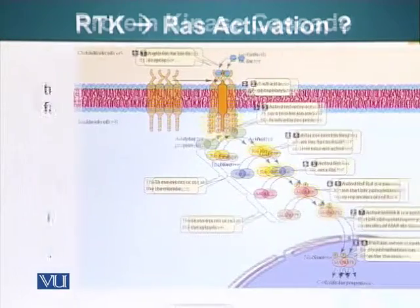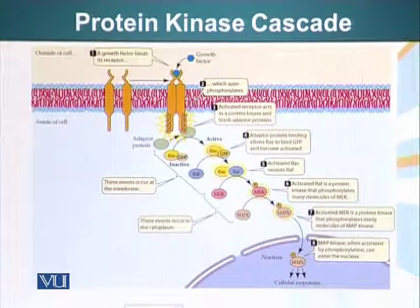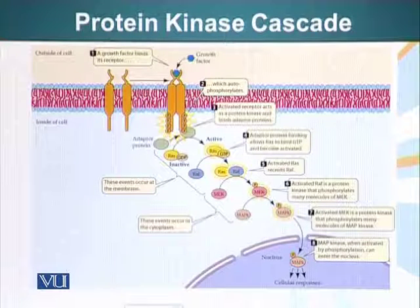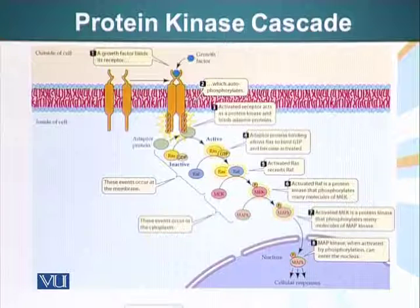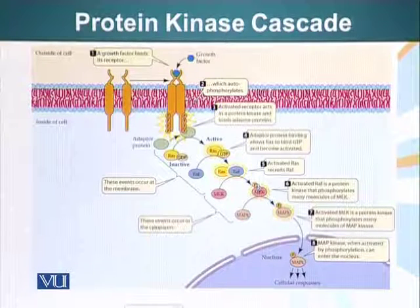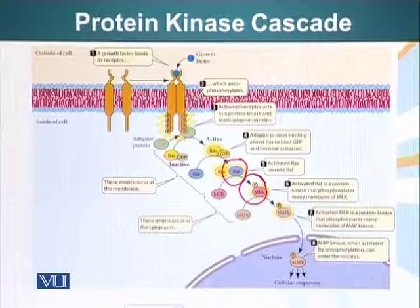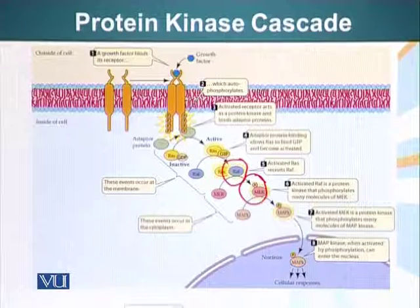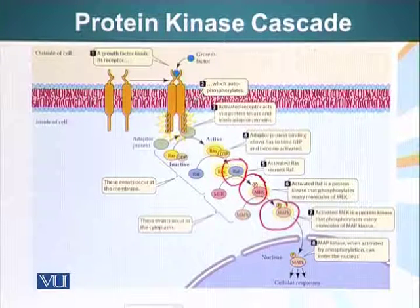This is a simple experiment that shows that RAS is somehow activated by these receptors which interact with PDGF and EGF. So, what happens after RAS is activated? RAS activates another protein called RAF. RAF in turn activates another protein called MEK. Here's the RAF, here's the MEK. RAF activates MEK and MEK activates MAPK.